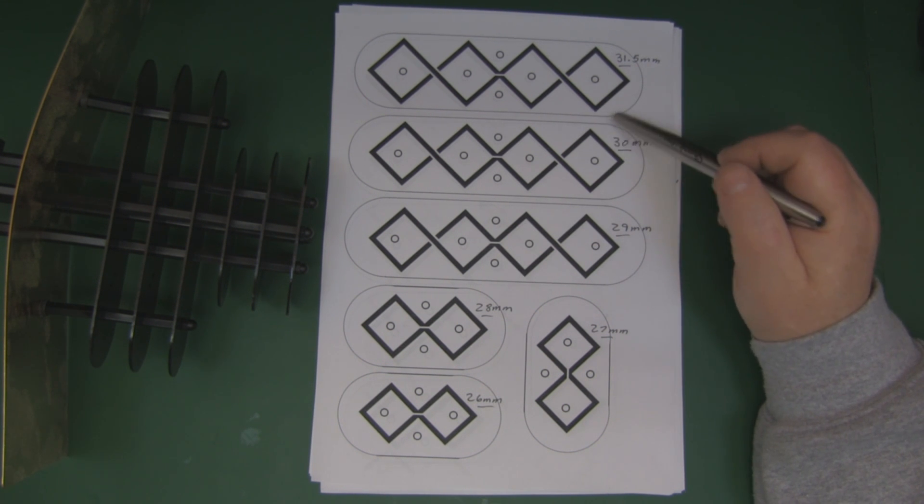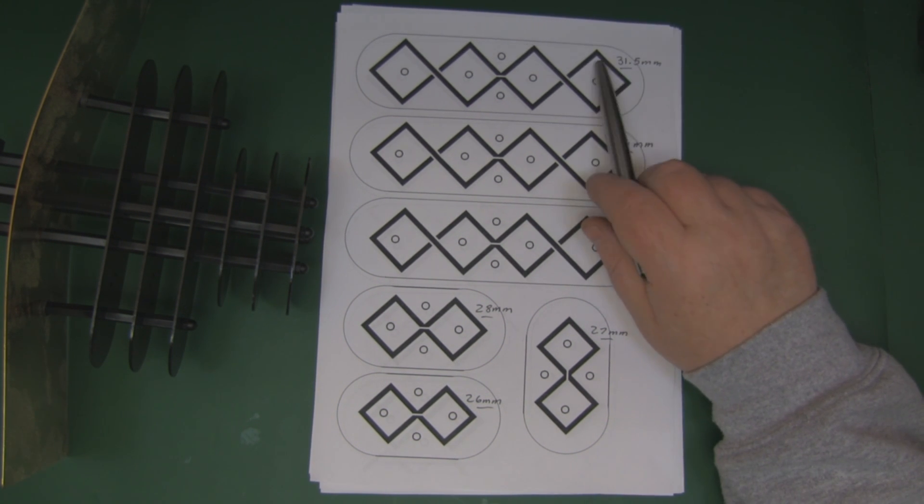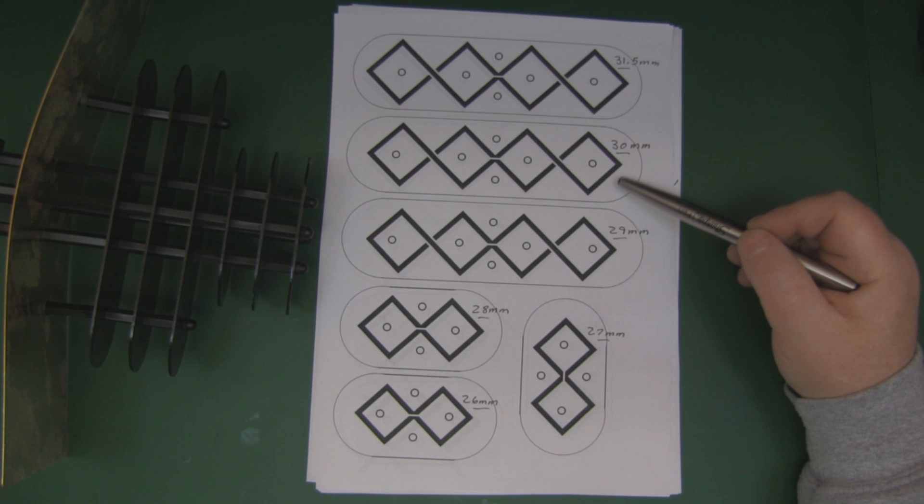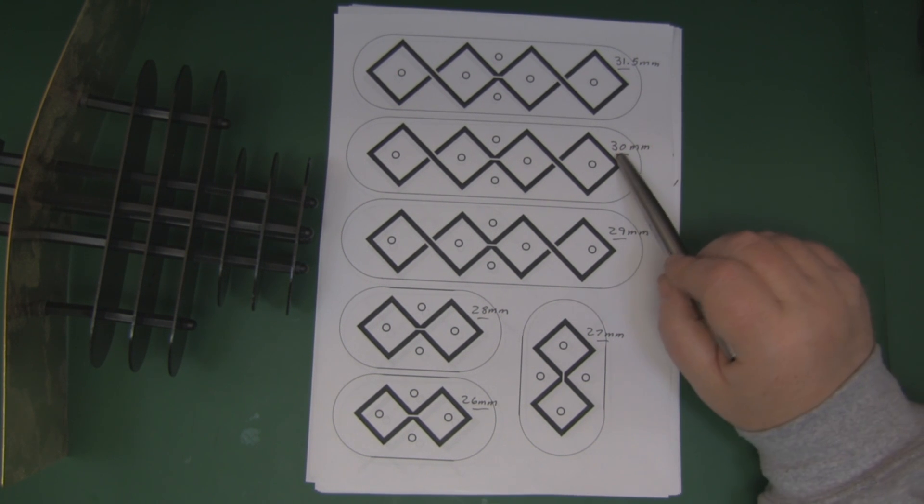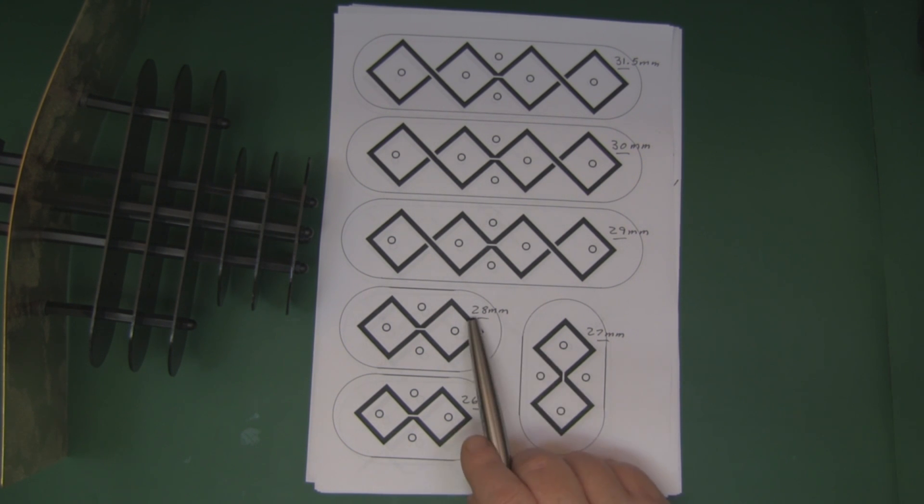The measurements are as follows - check them to make sure your printer has printed them at the correct size. The main driven element here is 31.5 millimeters at a quarter wavelength down the side. The first parasitic element is 30 millimeters and the second parasitic element is 29 millimeters. Then we've got the three single parasitic elements: 28 millimeters, 27 millimeters, and 26 millimeters.